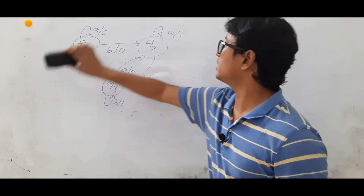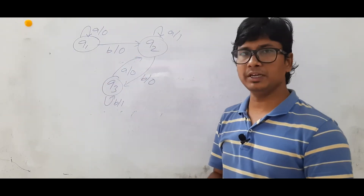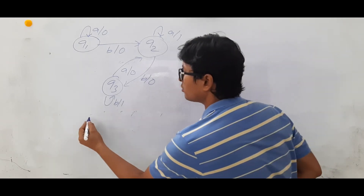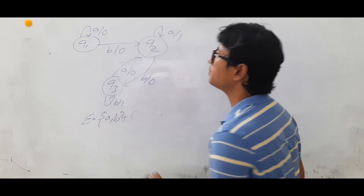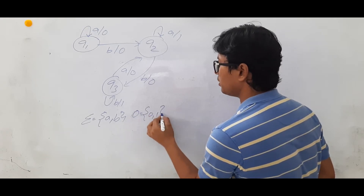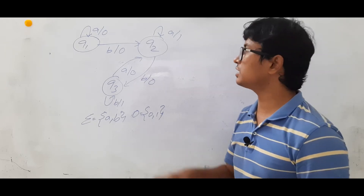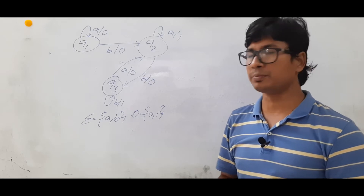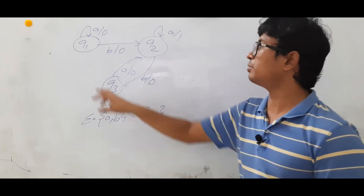Now we will see whether it is a Mealy machine or not. If any machine should be a Mealy machine, you should have input alphabets and you should have output alphabets. The input alphabets for this Mealy machine are A and B, and the output alphabets are 0 and 1. Now, for any machine to be a Mealy machine, it should first have the DFA properties — from each state on all the input alphabets you should have a move.